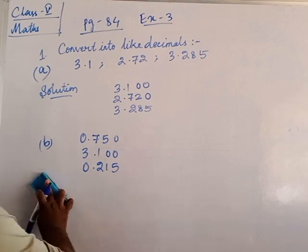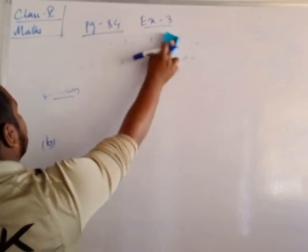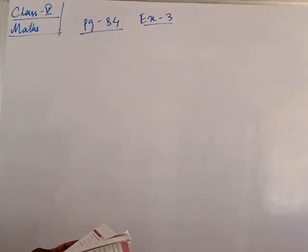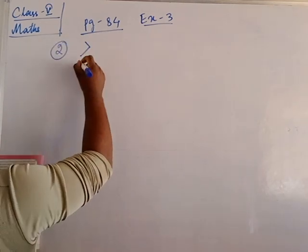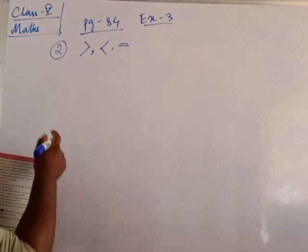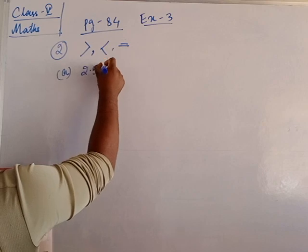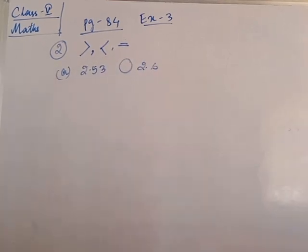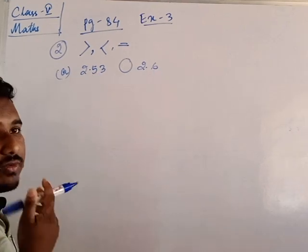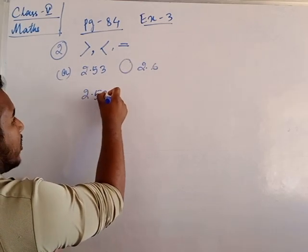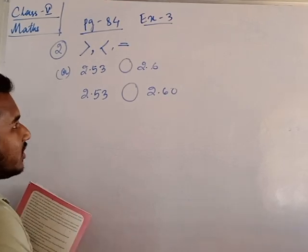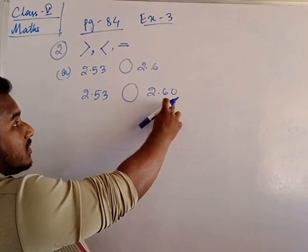The next question: compare the following decimals using greater than, less than, or equal — these three symbols. Look at A number: 2.53 and 2.6. The difference is one digit here and two digits there. Same as before, put zeros: 2.53 and 2.60. Now we have two digits. Which one is bigger — 60 or 53? 60 is bigger.